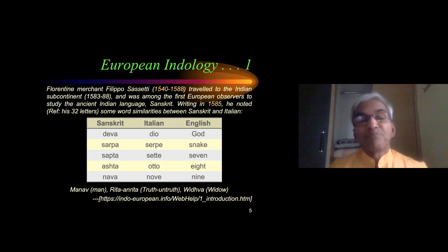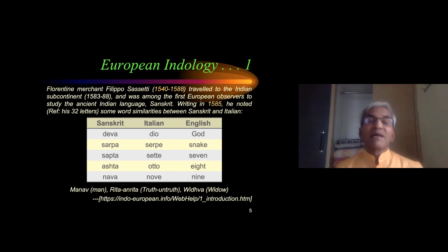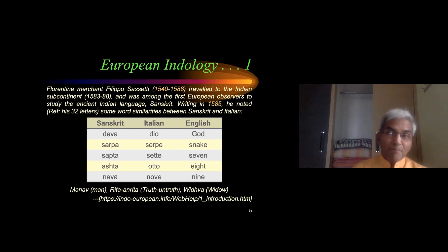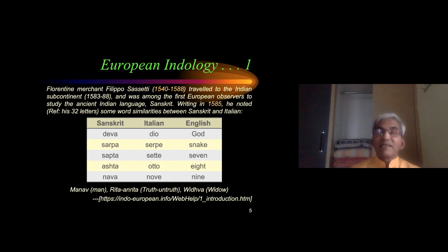The roots of this theory began around 1583 with Filippo Sassetti — an Italian merchant who came to India around 1583 and lived there for about five years, dying in India. He visited Goa and Malabar. By that time both Goa and Cochin were under the grip of the Portuguese. Sassetti wrote several letters home — about 30–32 letters — in which he made certain observations about Indian languages, especially Sanskrit.